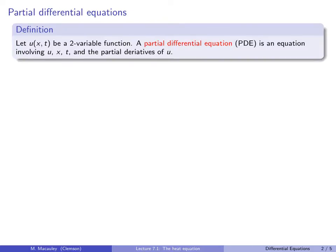It's important enough to write down: if u is a two-variable function of position and time, then a partial differential equation, or a PDE, is an equation involving u, the variables, and the partial derivatives of u.